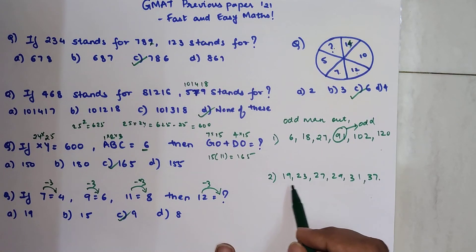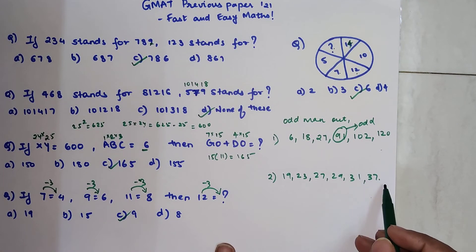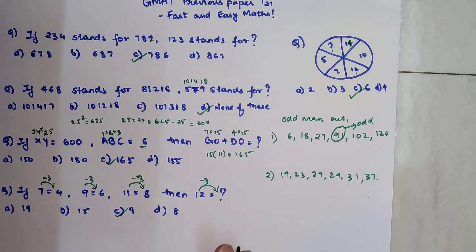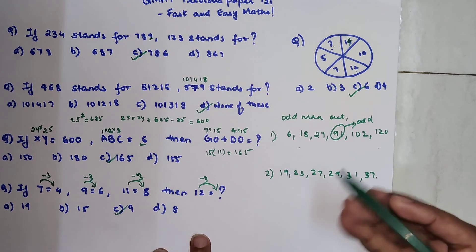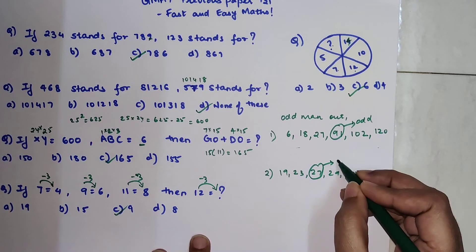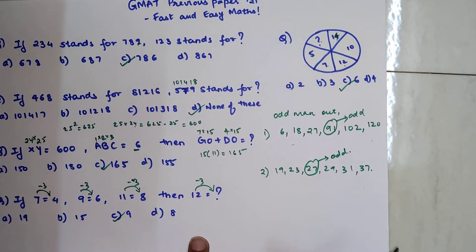Similarly now next one we have 19, 23, 27, 29, 31, 37. Now if you look closely all of them are prime numbers except for 27. So that is my odd number.